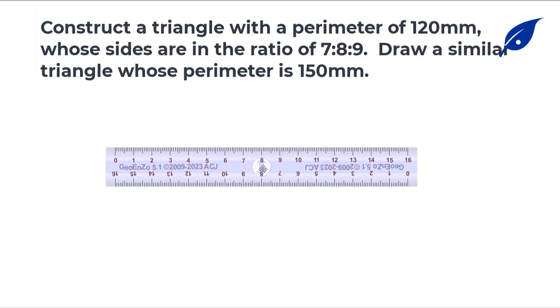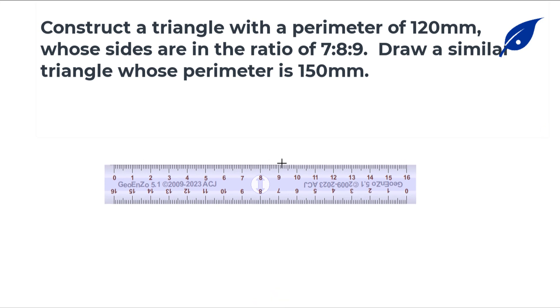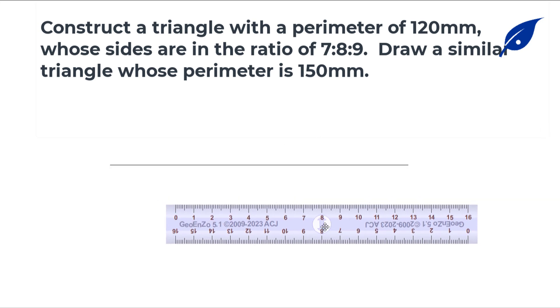Welcome to this tutorial. In this lesson, we're going to construct a triangle with a perimeter of 120 millimeters whose sides are in the ratio of 7:8:9.